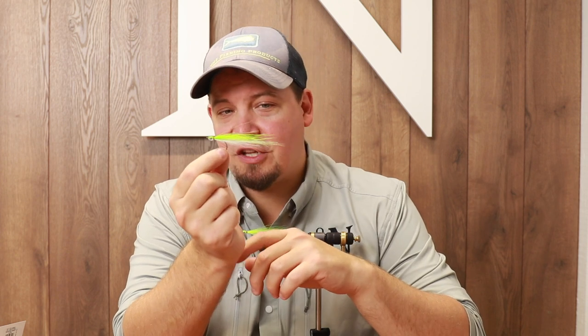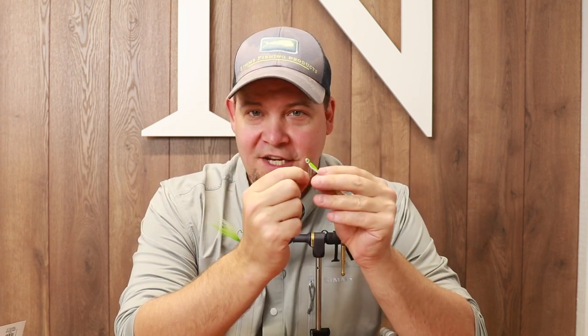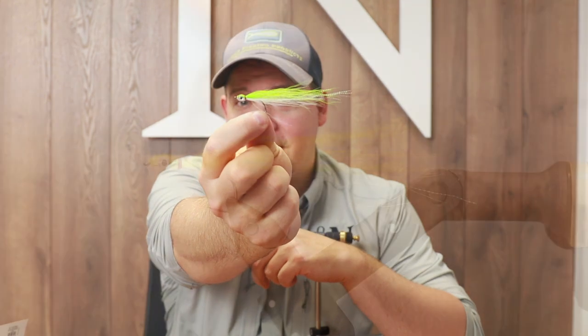The thing about these Thunder Creeks is they're very efficient patterns. They're fast to tie and they look amazing in the water. So stay tuned because now I'm going to show you exactly how to tie a small green Thunder Creek sand eel.